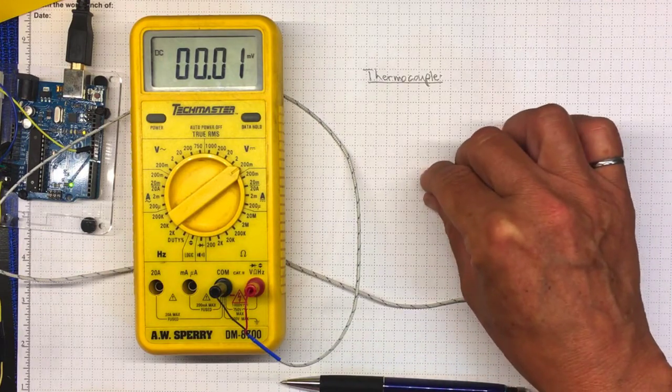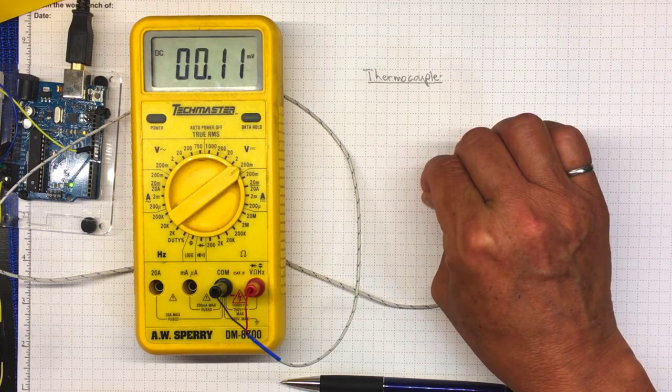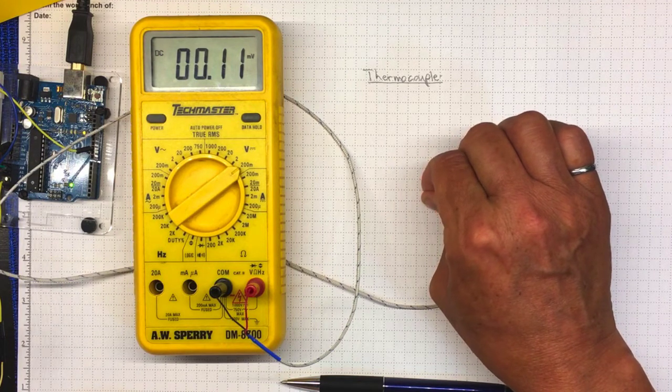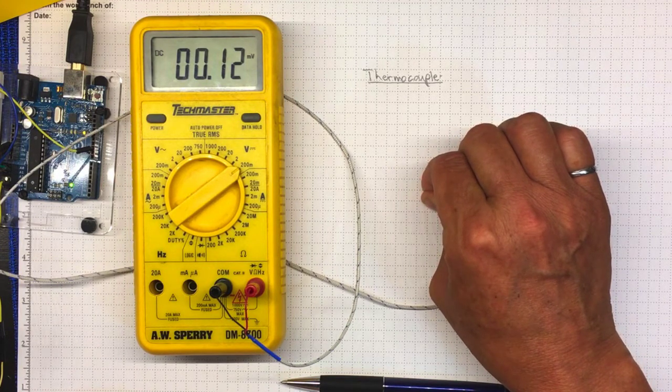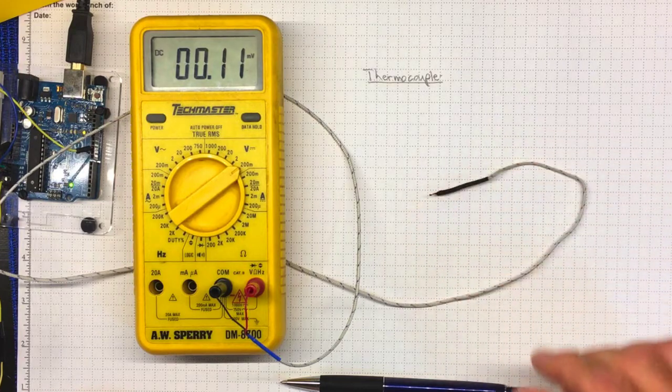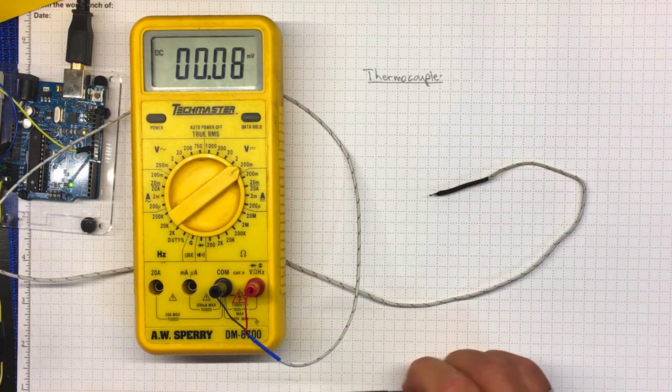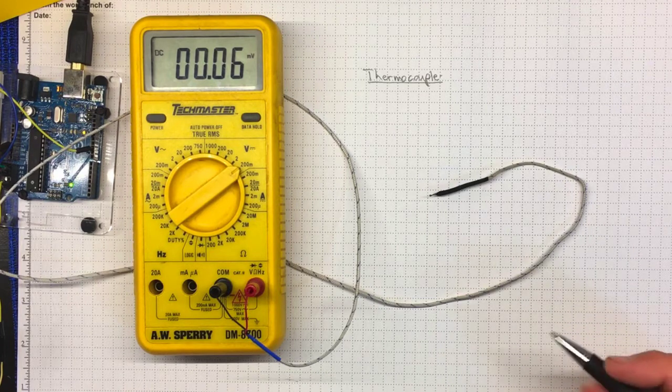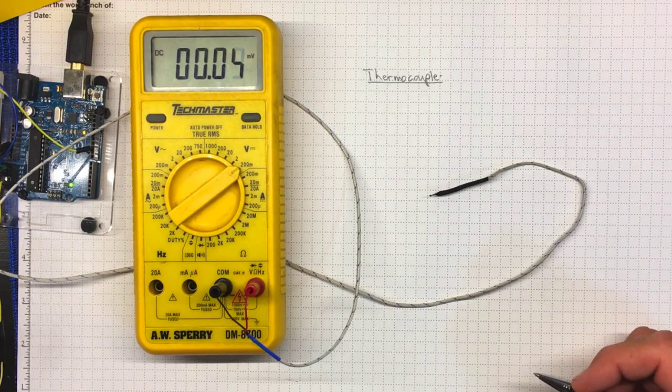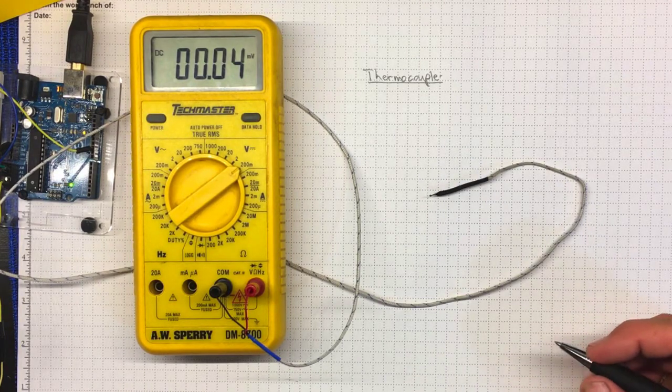So if I squeeze it between my fingers the voltage goes up, but notice that's not a very high voltage. So this thermocouple has a really low sensitivity and that's something we're going to need to think about later on when we try to actually make measurements from a thermocouple.